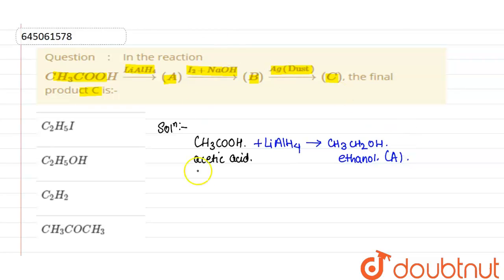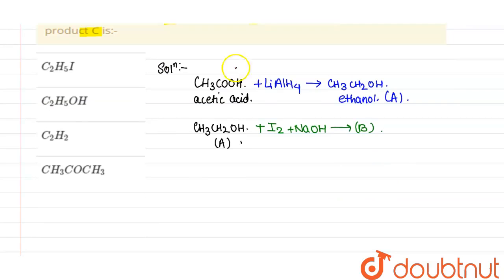So now what happens, this Ethanol which is CH3CH2OH, that is A, and now it will be reacting with iodine in NaOH to give B. Now let's see the formation of this.